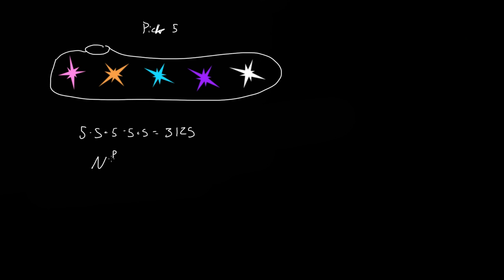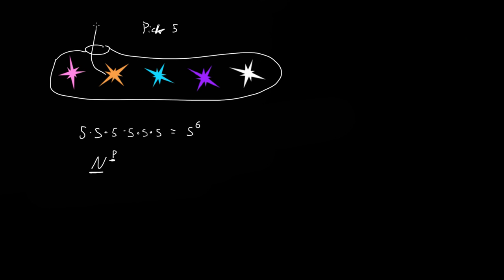So let's say we picked it maybe six times. If we picked it six times, that's just five times five times five times five times five times five — five to the power of six. So it's n, the number of things in the sack, to the number of times we picked it. But that's only if we replace it — take it out, look at it, and put it back in.